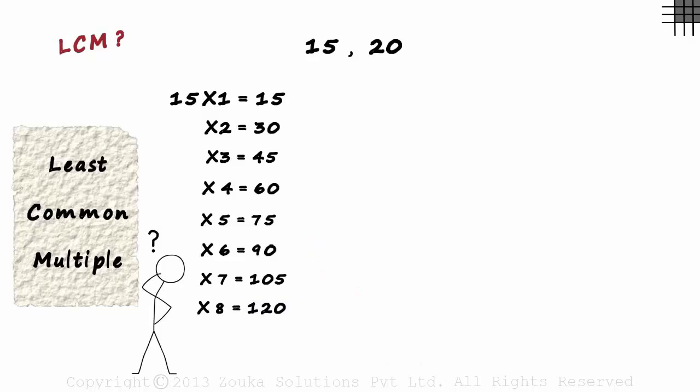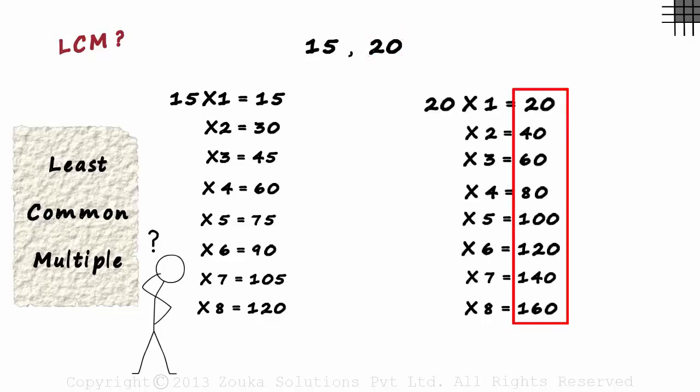Similarly, let us write down the first eight multiples of the second number, which is 20. So these eight numbers here—20, 40, 60, and so on—are the multiples of 20.